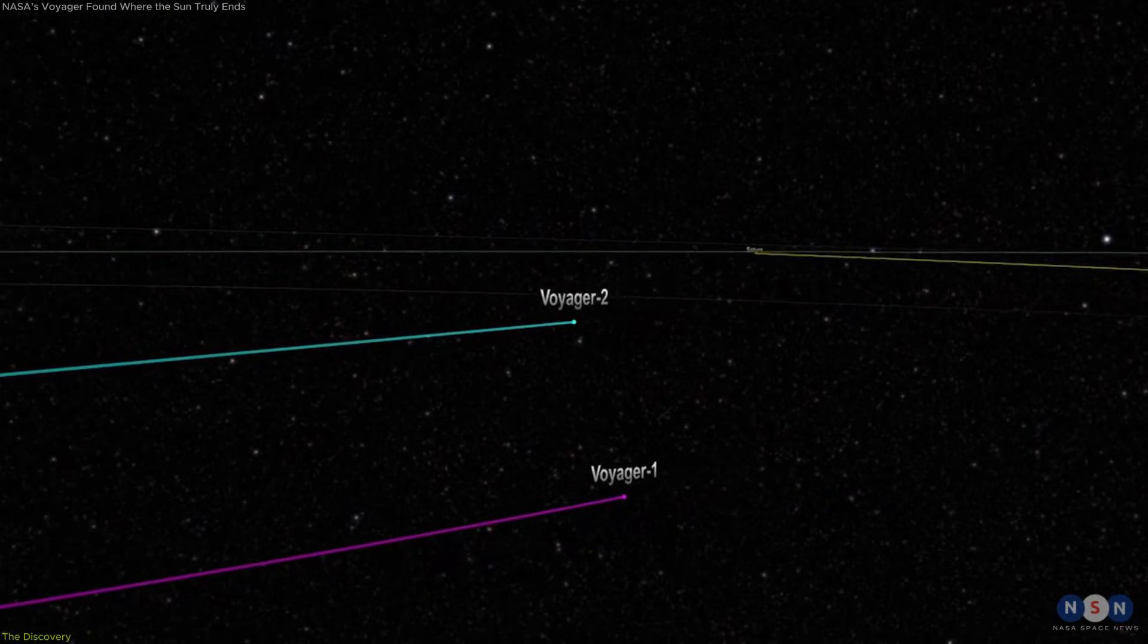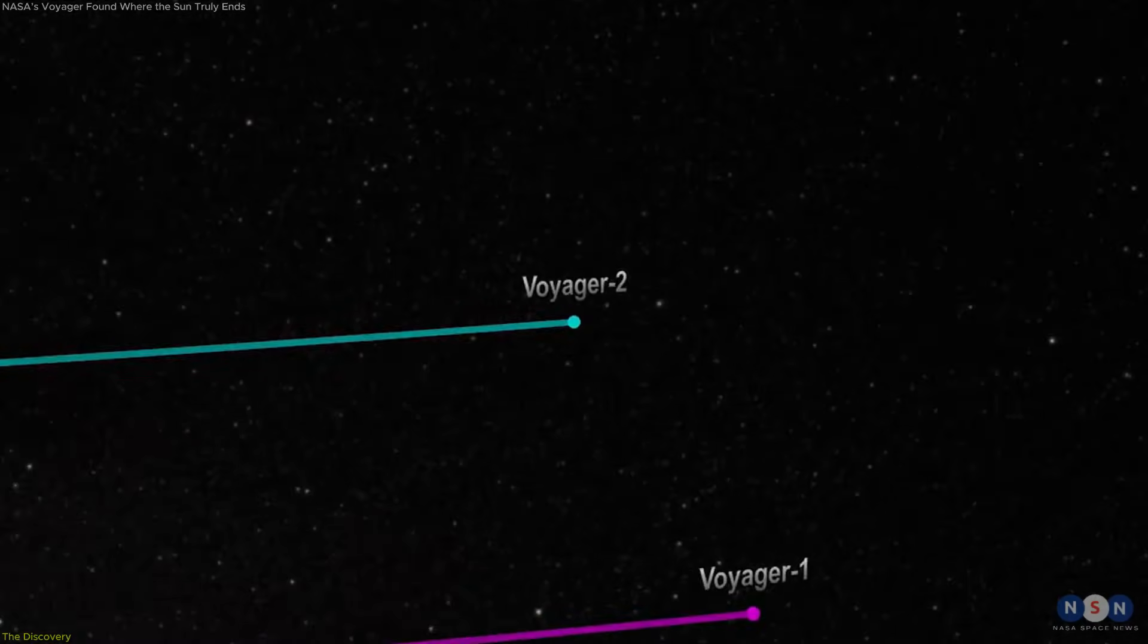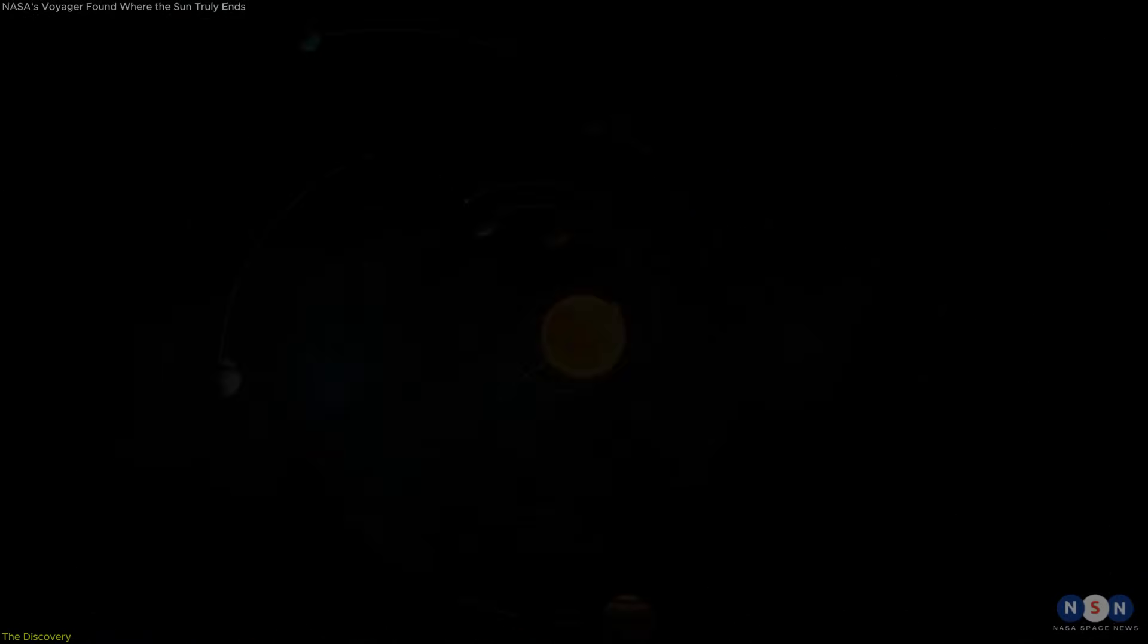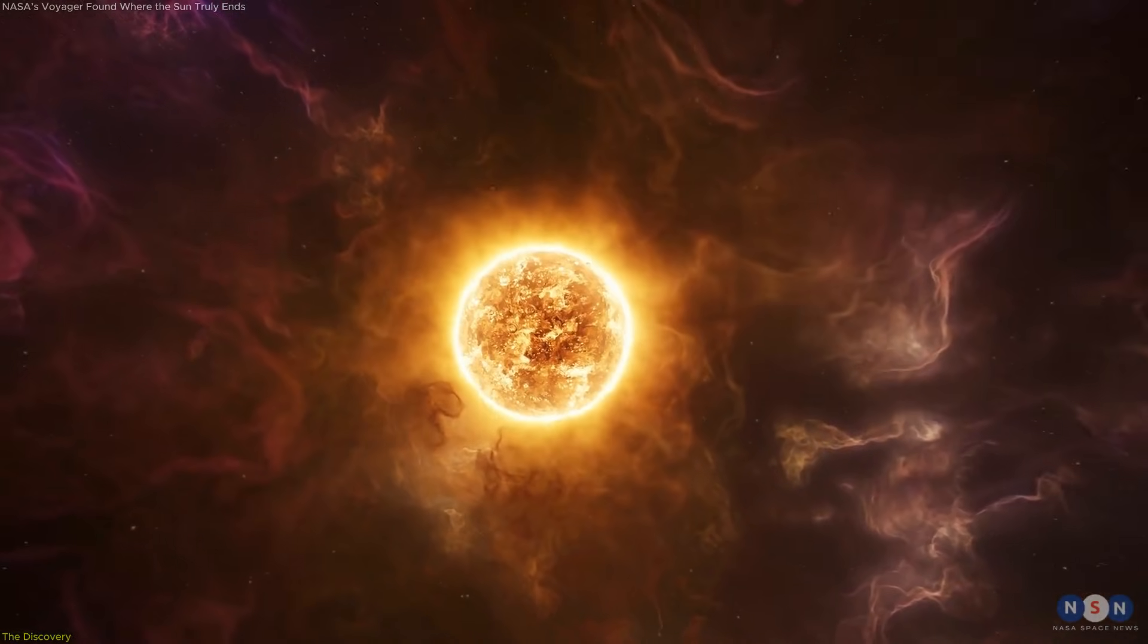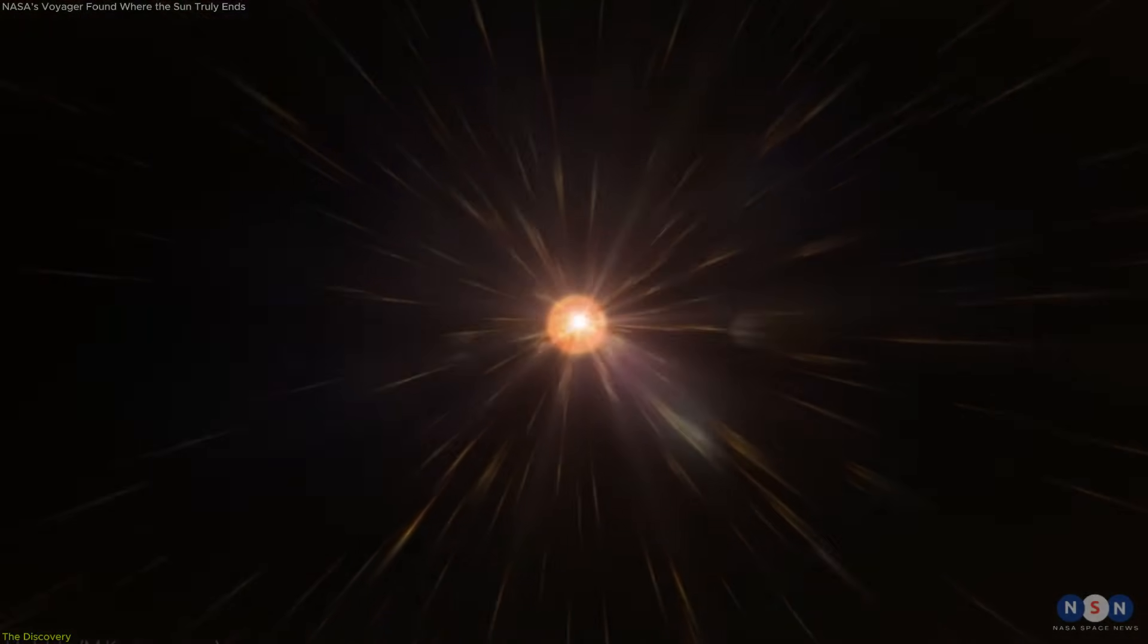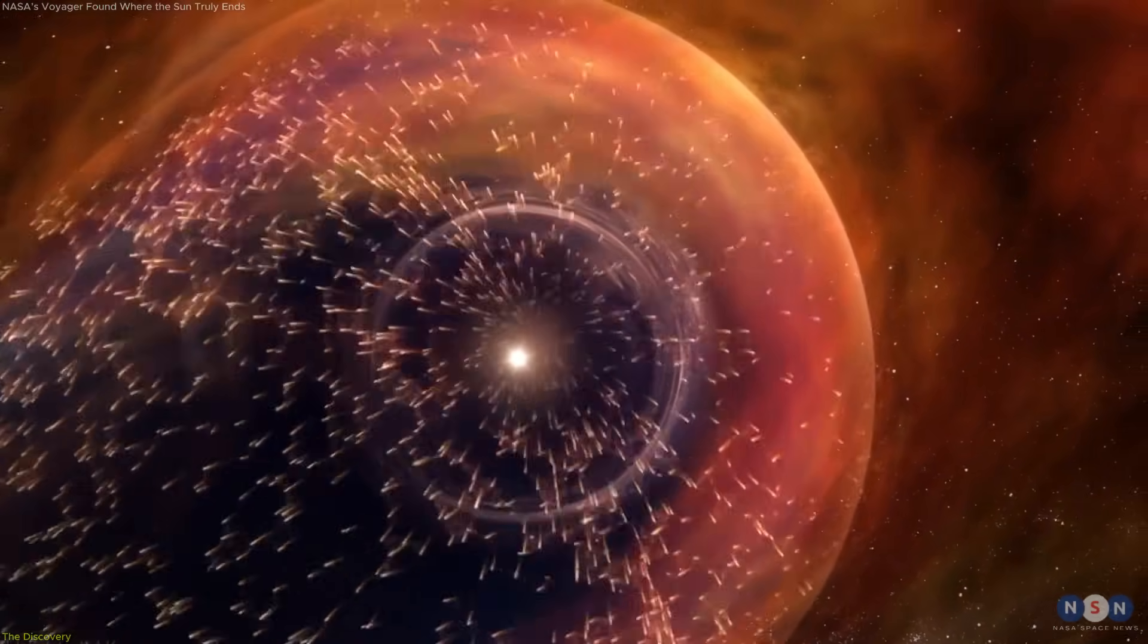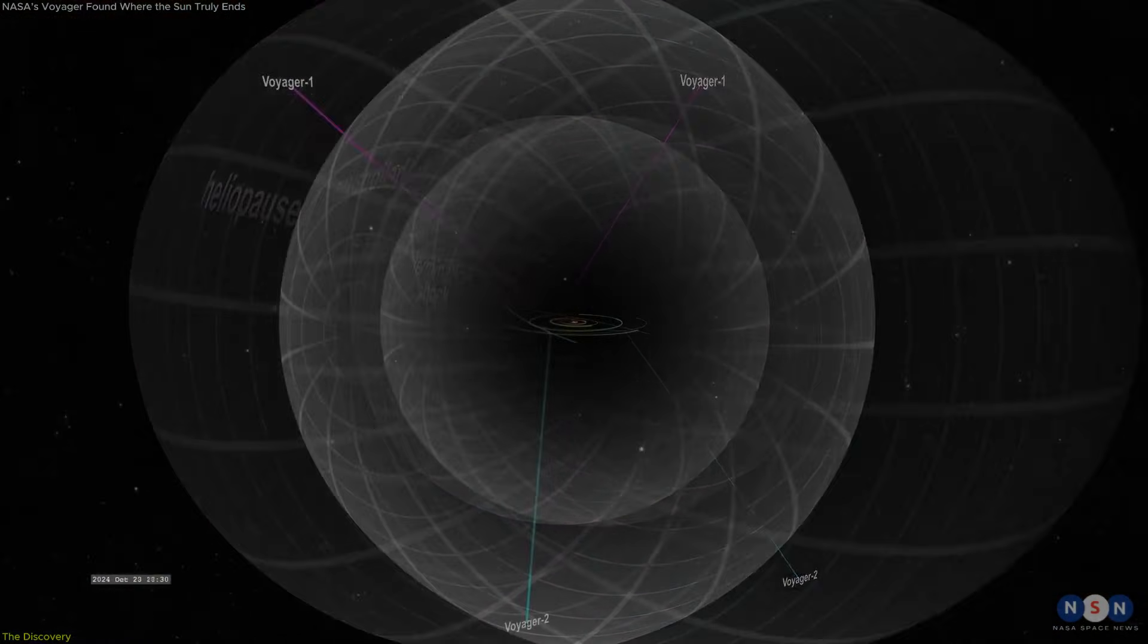Voyager 1 and Voyager 2 were launched in 1977 to explore the outer planets, but their most valuable contribution came decades later, far beyond the orbit of Neptune. As the spacecraft traveled outward, they entered a region where the flow of charged particles from the Sun, known as the solar wind, slows down as it encounters the surrounding interstellar medium. This interaction forms a vast bubble around the solar system called the heliosphere. The outer boundary of that bubble is the heliopause.